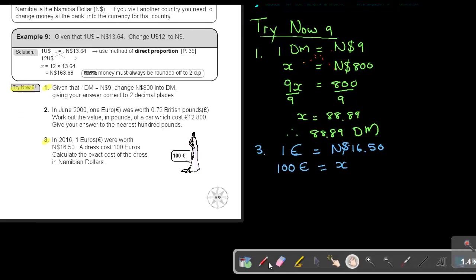So what do I do? I just cross multiply. And then I'm going to say X and that is 16.50 times 100. And that is going to give me an answer of 16.50.